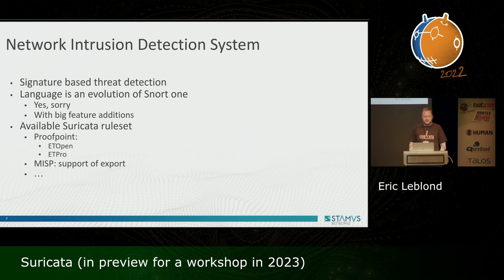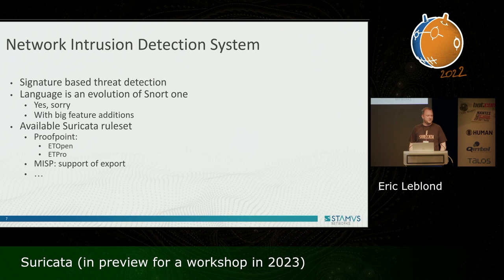Historically, Suricata was started as a rewrite of Snort — I think I've seen some Talos people leaving the show at the beginning. Maybe they don't want to know what we have done after that. One problem we have because we came as a copycat of Snort at the beginning is that we used the language of Snort for signatures, and the language of Snort for signatures is not really nice to read and it's not easy to understand. We tried to fix it over time with some big features and improvements, but it's still a bit complicated to read.